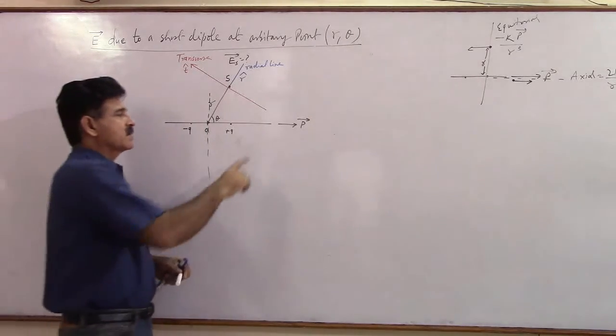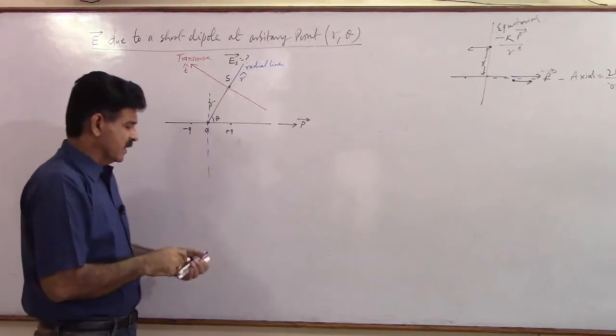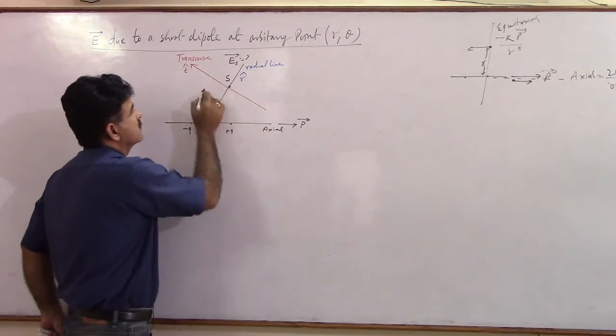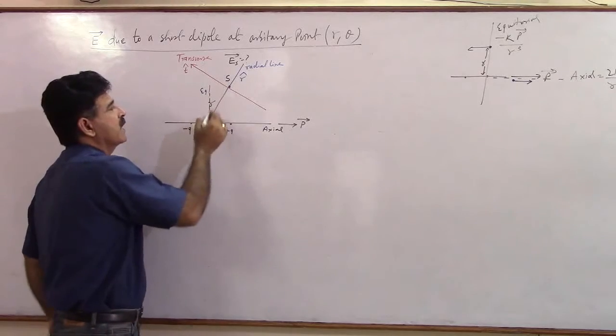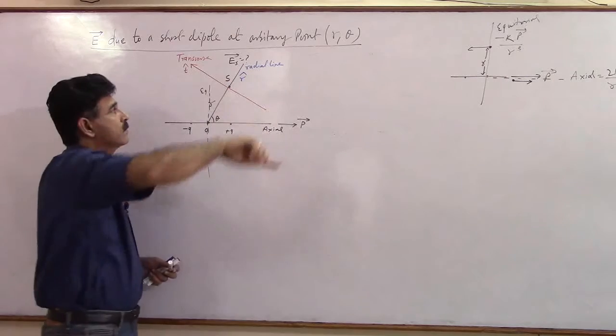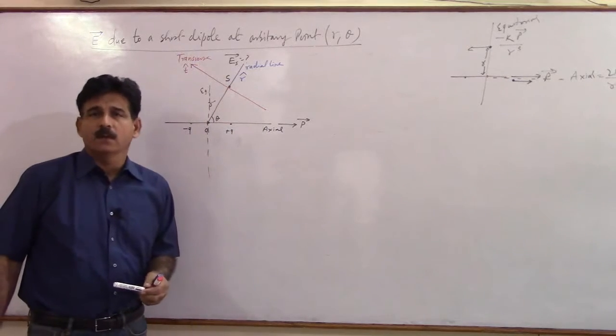So you had X cap, your axial, and equatorial. But I'm telling you this line's name I'm keeping as radial, and this line's name I'm keeping as transverse.